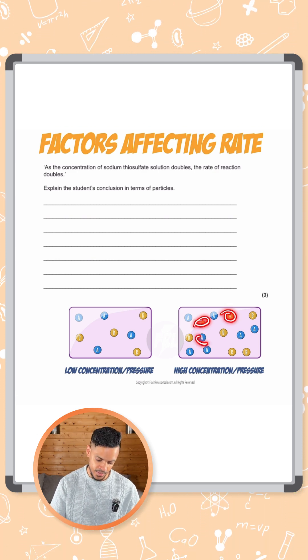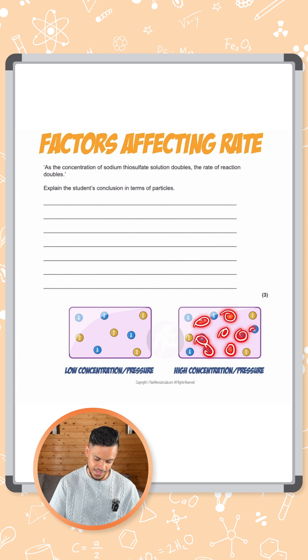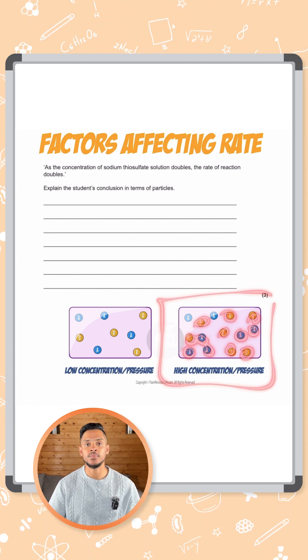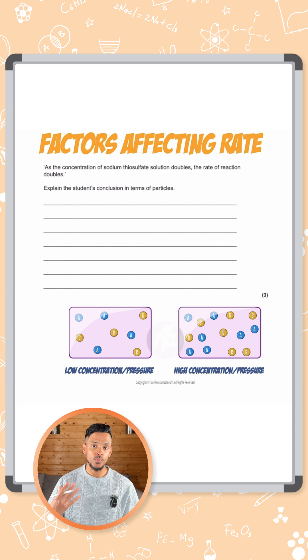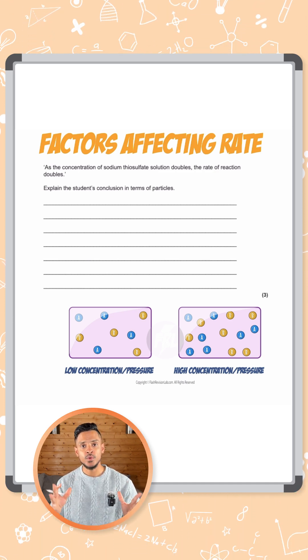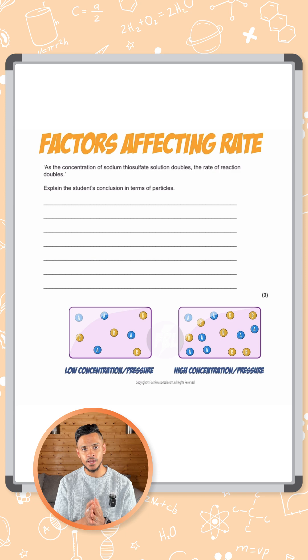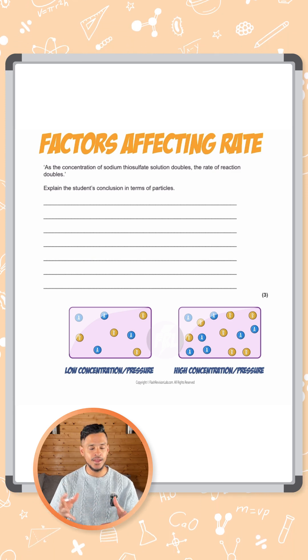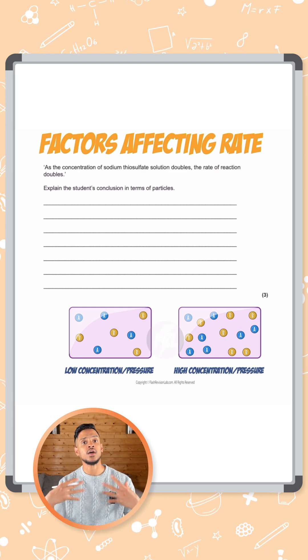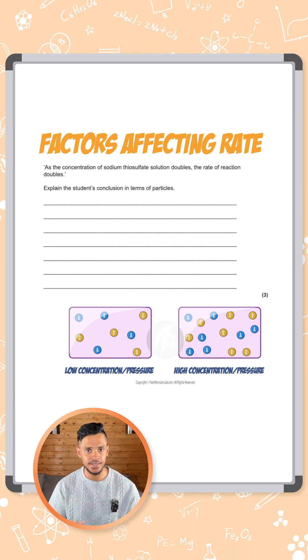On the right-hand side we have many more particles in the same amount of volume, so that means this one has a much higher concentration. What happens is because there's more particles in a given volume, when these particles are moving around in this box or in this area, they are more likely to collide with each other. So when they collide with each other with a high enough energy, they end up reacting.